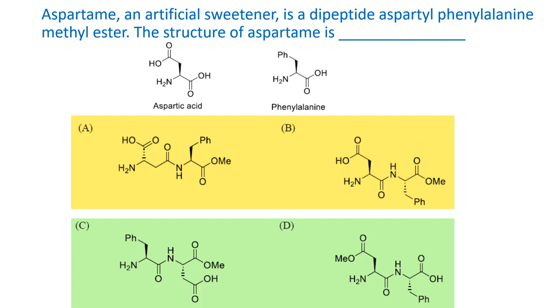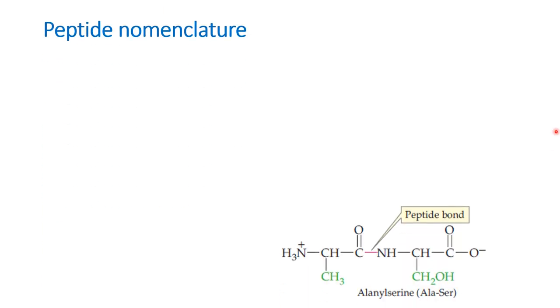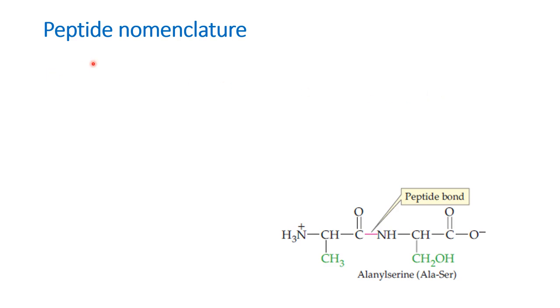The question states: aspartame, an artificial sweetener, is the dipeptide aspartyl phenylalanine methyl ester. The structure of aspartame and the phenylalanine structure are given, and four options are provided. We are expected to find out which among these is the correct structure.